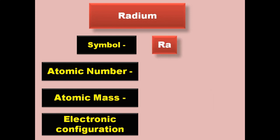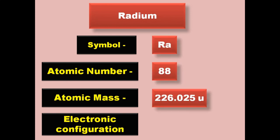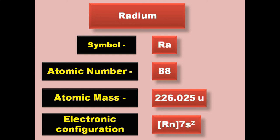Radium has symbol Ra, atomic number 88, atomic mass 226.025, electronic configuration [Rn] 7s2. Radium is an alkaline earth metal and exists in solid form at room temperature.